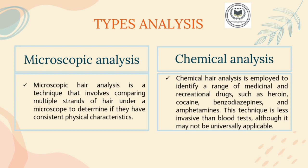Chemical hair analysis is employed to identify a range of medicinal and recreational drugs such as heroin, cocaine, amphetamines, and others. This technique is less invasive than a blood test, although it may not be universally applicable. Chemical hair analysis is commonly used to determine if a patient is complying with prescribed drug regimens or to verify witness statements that they have not taken illicit drugs.